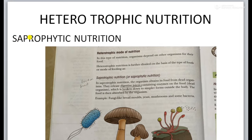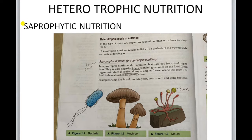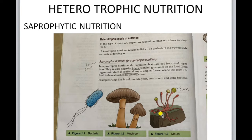Saprophytic nutrition: 'sapros' means dead, so in this type of nutrition the organisms depend on dead organisms. Examples are bacteria, fungi, mushrooms, and yeast. The organisms which show such type of nutrition are known as saprophytes.